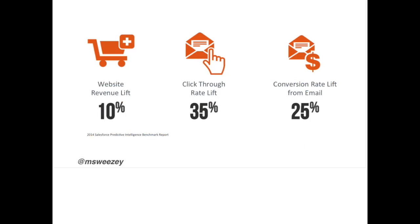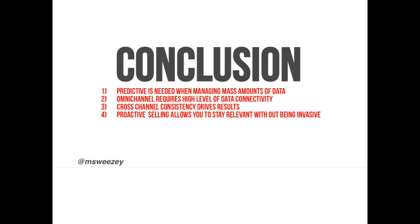When you start looking at journeys and predictive content, here are the things you can start to see: revenue lift by a significant margin of 10%, click-through rate in emails by 35% — because the content you are putting in those emails is dynamically based off of what we think the best thing is going to happen over a true program. You can also see other financial measures and metrics. When you really boil it all down, you create a lot of content, but it is serving that content in effective ways that makes things different.